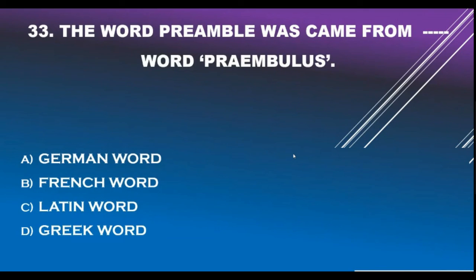Question number 33. The word 'Preamble' came from the word 'preambulus': Option A - German word. Option B - French word. Option C - Latin word. Option D - Greek word. Correct answer is Option C: Latin word.